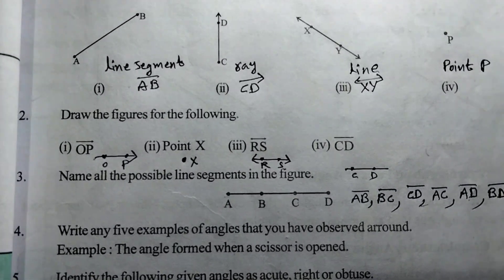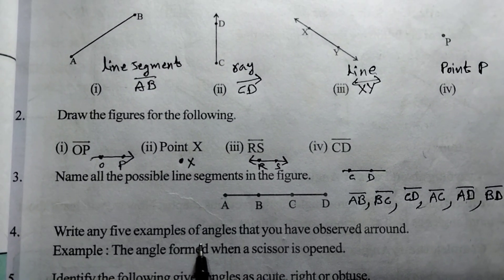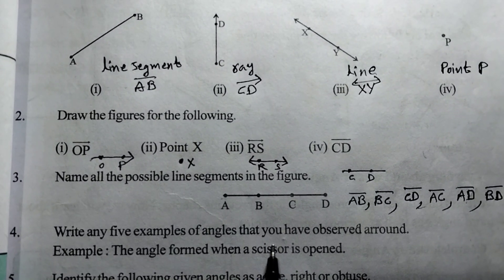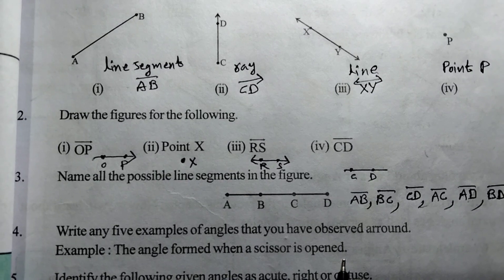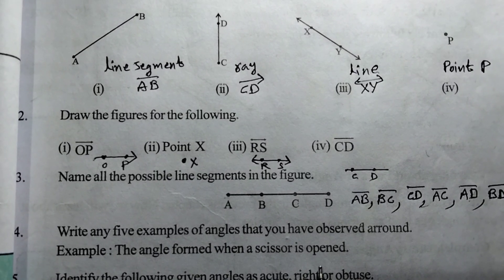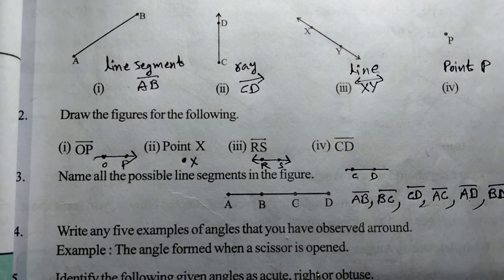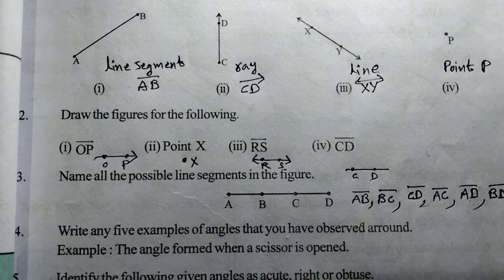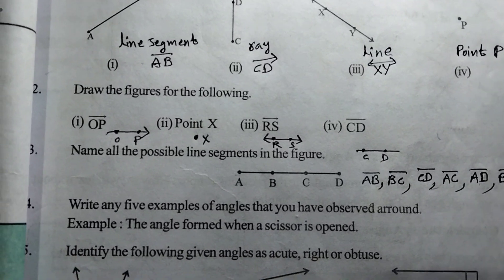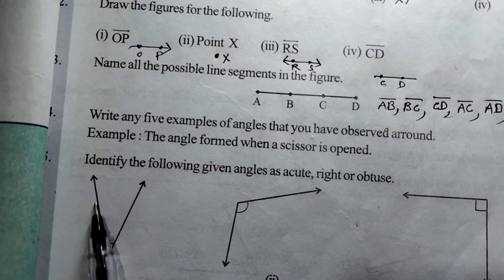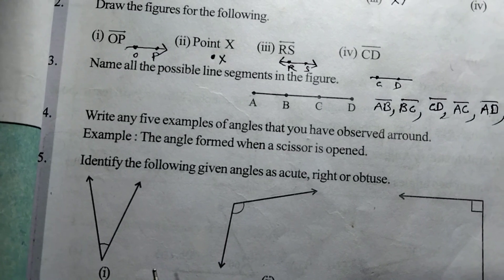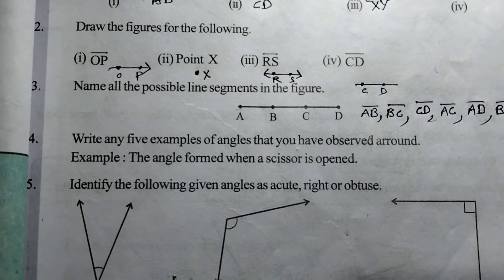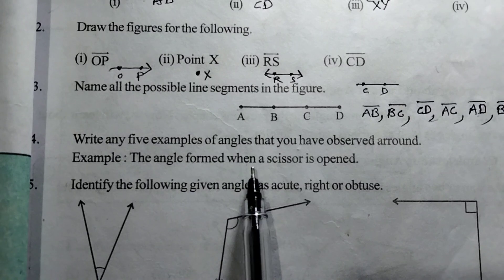Coming to the fourth question: write any five examples of angles that you have observed around you. One example is the angle formed when a scissor is opened — it forms a V-shape.